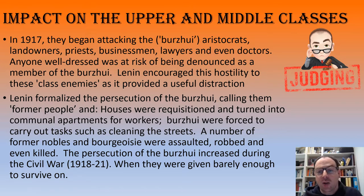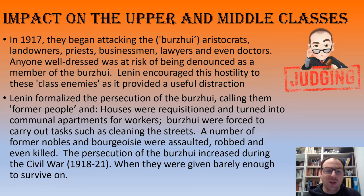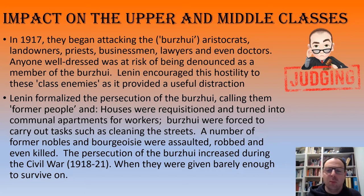In 1917 the communists started attacking the bourgeois, the aristocrats, the landowners, the priests, the businessmen, the lawyers, and even doctors. Essentially anybody who was well-dressed and a member of the middle or upper classes was at risk of being denounced as bourgeois. Lenin encouraged hostility towards these groups as class enemies, and in many ways it provided a distraction, giving the peasantry and workers a focus rather than on what was going wrong with the revolution.